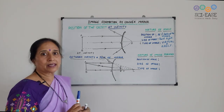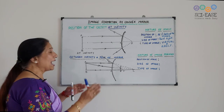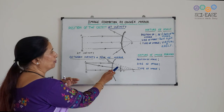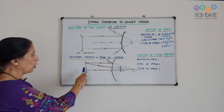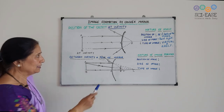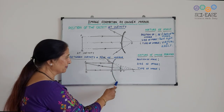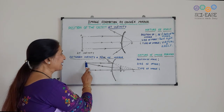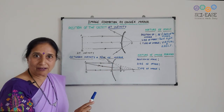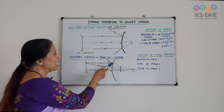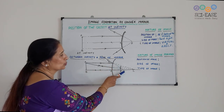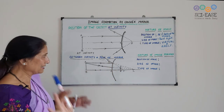The second case is when the object is at some finite distance, meaning between infinity and the pole of the mirror. So the object is here — AB is the object we have taken. This is the convex mirror. The ray parallel to the principal axis will strike the reflecting surface of the mirror, and this will diverge. When we produce it, it will pass through the focus.